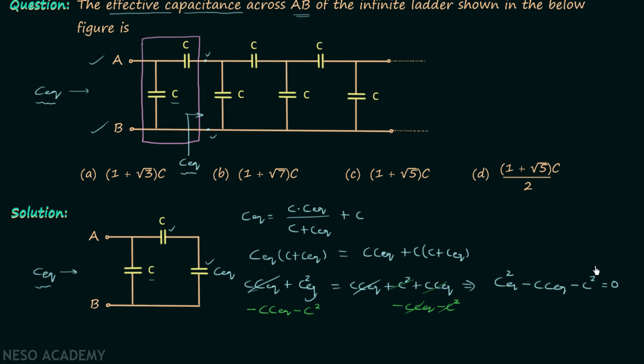When we compare this equation with Ax² + Bx + C = 0, we can see that A is equal to 1, B is equal to minus C and C is equal to minus C squared.